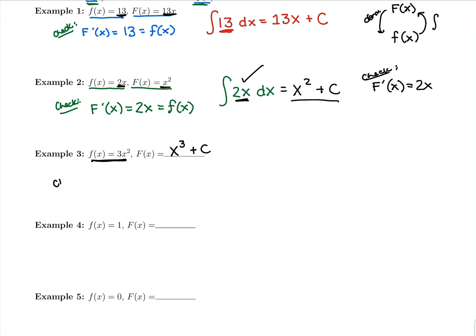I can check that guess by taking the derivative of it. The derivative of our antiderivative should get us back to this original function, 3x squared. So we're going to check. The derivative of x cubed, bring down the power, is going to be 3x to the second. And then derivative of c is just 0. So yes, we get back to exactly where we started.